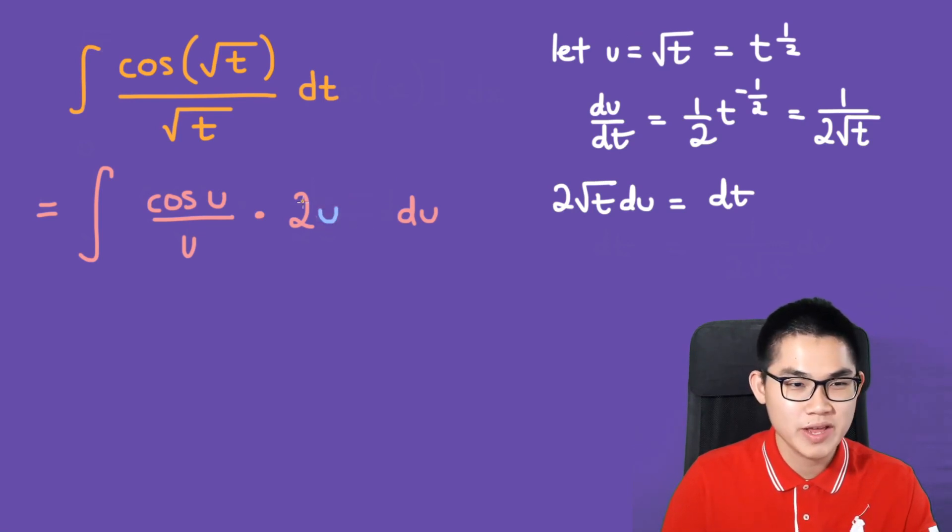So what we're going to do is cancel out this u with this u, and we end up with the integral of cos u. We're going to move this 2 outside of the integral because it's a constant, and then we have du.